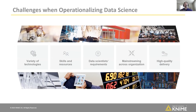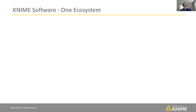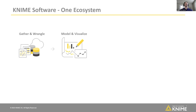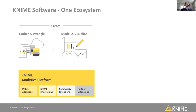So you face different challenges when you're operationalizing data science. You've got all these different technologies you may need to implement. Folks on your team have different skills and resources. You want to make sure that you're mainstreaming this across your organization and that you have a good high-quality delivery system. That's what we try to provide with our KNIME software in a single ecosystem. On the left-hand side is the KNIME analytics platform, which helps you import your data, do all your data wrangling and ETL, create your models and visualizations.